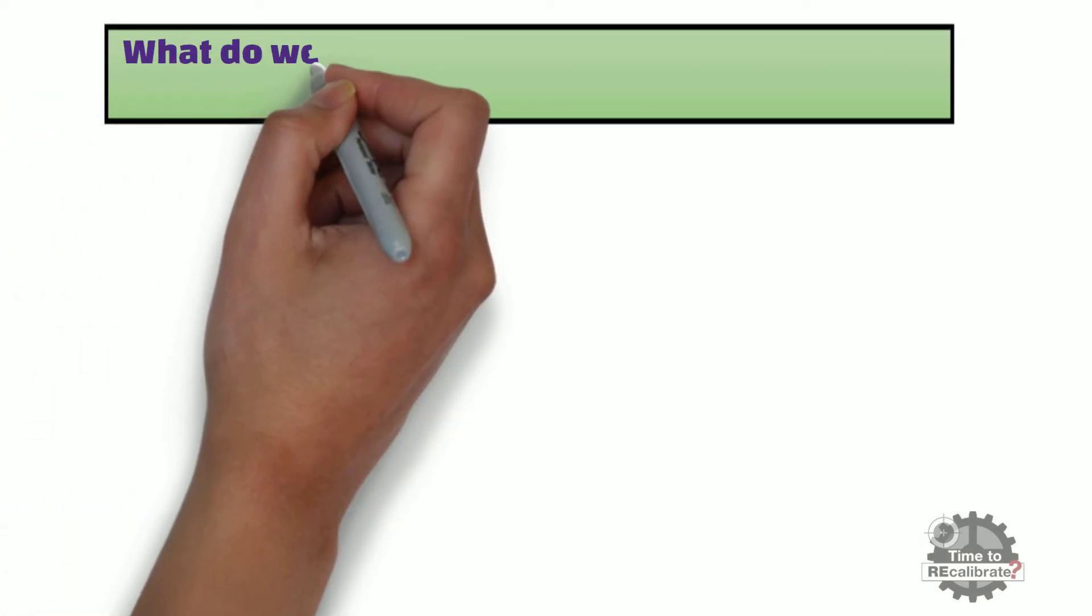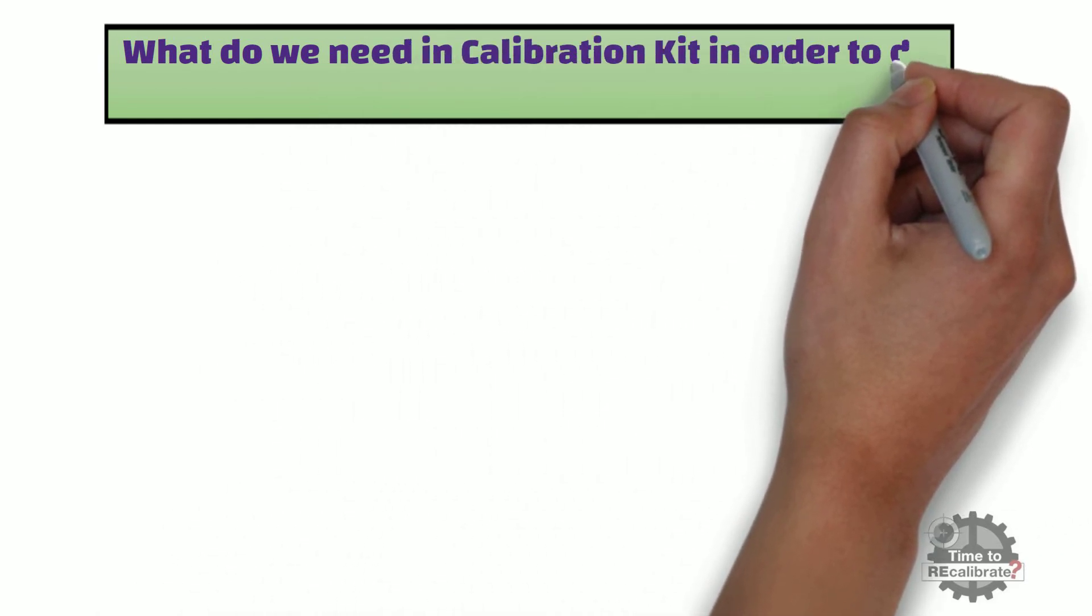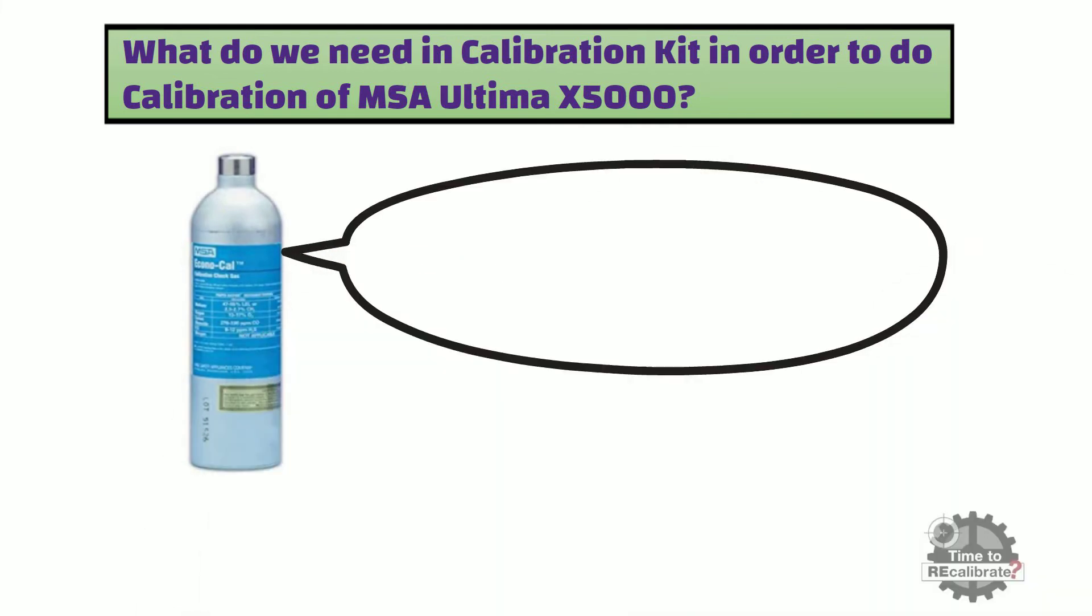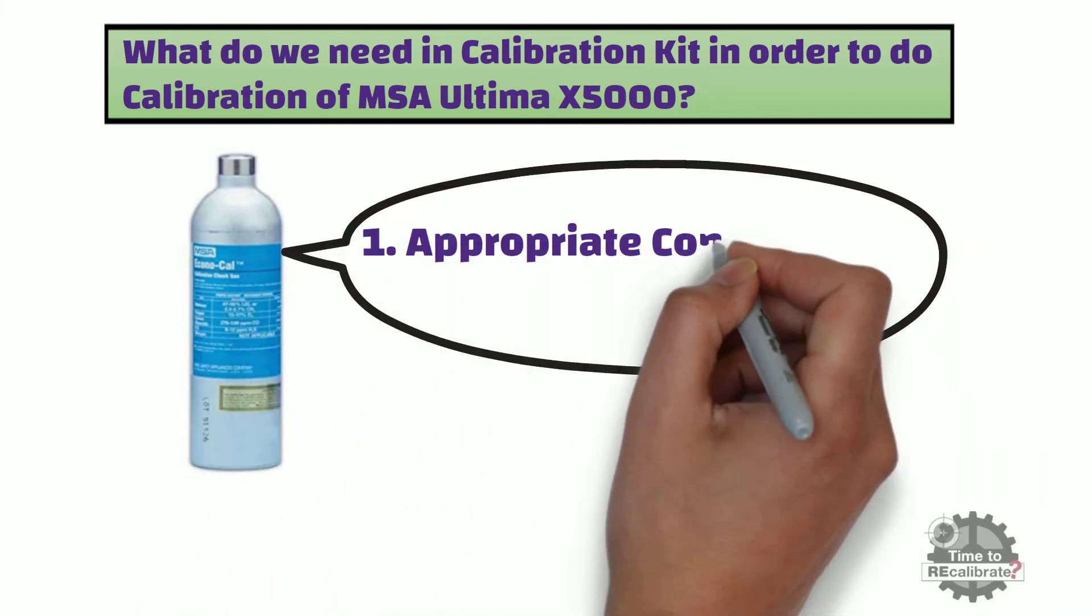Now, what do we need in a calibration kit in order to do calibration of MSA Ultima X5000? First of all, we need a suitable concentration calibration gas bottle.